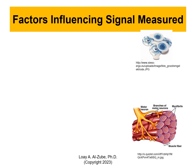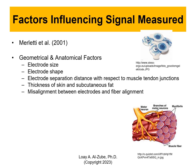Geometrical and anatomical factors include electrode size (big or small), electrode shape (cylindrical or rectangular), electrode separation distance with respect to muscle tendon junctions, where the electrode is placed on the muscle, how far from the tendons, the thickness of skin and subcutaneous fat of each subject, and the misalignment between the electrode and the fiber alignment. If I'm trying to measure bicep activity, the electrodes have to be along the muscle fiber longitudinally. Those are factors affecting the data.